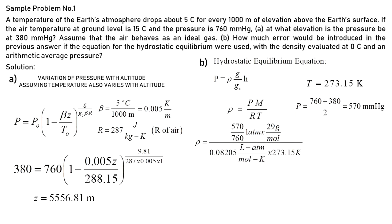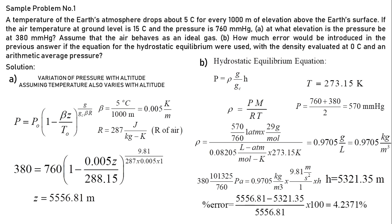So density from ideal gas equation is equal to 0.9705 kilograms per cubic meter. And direct substitution into the equation for hydrostatic equilibrium, we can now solve for the elevation equals z. And solving for percent error, we have 4.2371%.